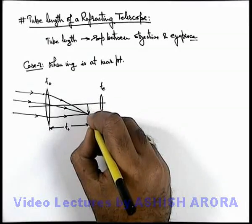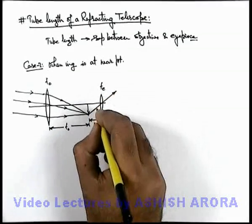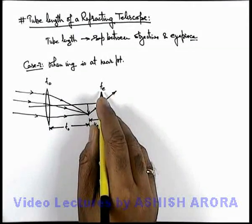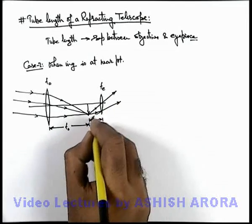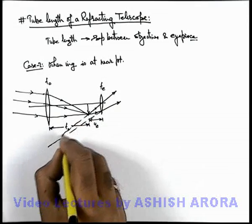And this u_e is such that when the final rays are coming out from the eyepiece lens after refraction, then these rays are diverging in such a way that the final image is produced...